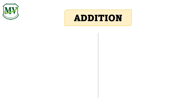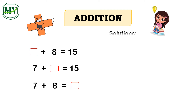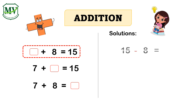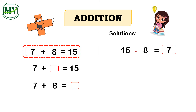Let's find out the unknown numbers from the following addition number sentences. First, unknown number plus 8 equals 15. When the first addend is the unknown, we change the operation from addition into subtraction. Then subtract 8, the second addend, from the total 15. The unknown is 7.